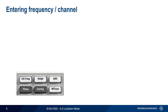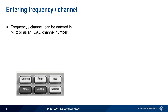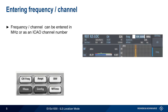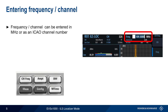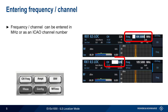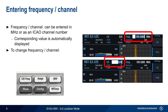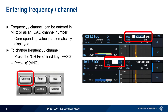The first step in ILS localizer analysis is entering the frequency or channel of the ILS localizer. This can be done either as the absolute frequency in MHz or as an ICAO channel number. Note that the EVS will automatically calculate and display the corresponding value. To change the frequency or channel on the EVS, press the Channel/Frequency hard key. In VNC mode, use the keyboard shortcut Q to enter either frequency or channel.